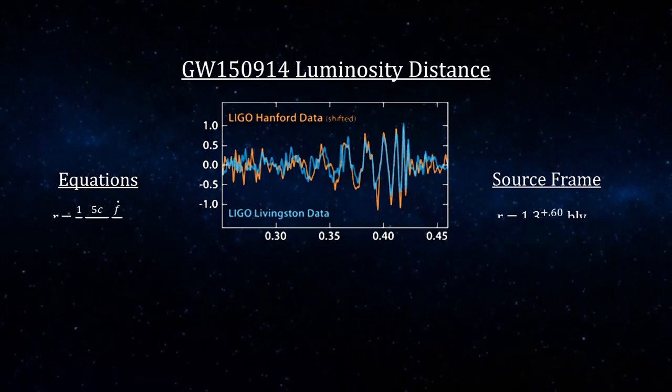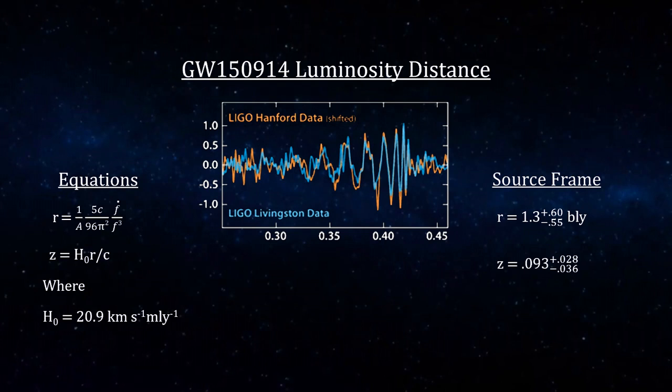The amplitude and frequency data points give us the luminosity distance. It is important to note that gravitational waves experience redshifting as they travel across the cosmos, just like light does.